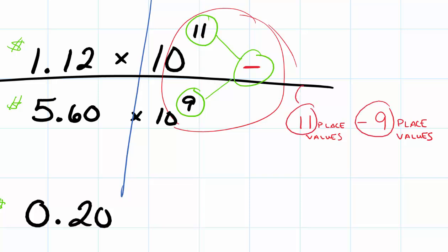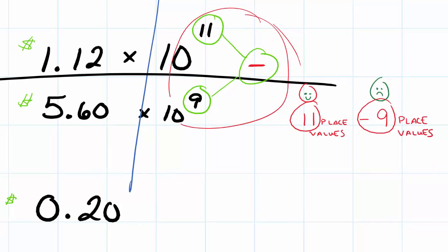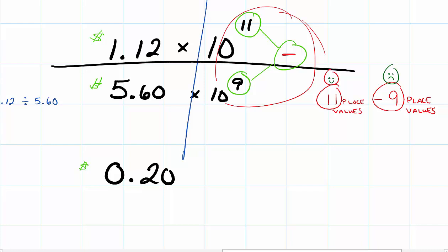All right, so I'm going to circle these terms. I've got a positive 11 and I have 9 negatives. Well, I've got more positives than negatives. I've actually got two more positives than I do negatives. And so that means I'm going to end up with two place values.